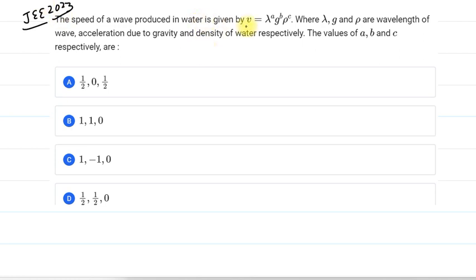The speed of wave produced in water is given by V equals lambda raised to power A, G raised to power B, and rho raised to power C, where lambda, G, and rho are the wavelength, acceleration due to gravity, and density of water. So we have values of A, B, C to find out.